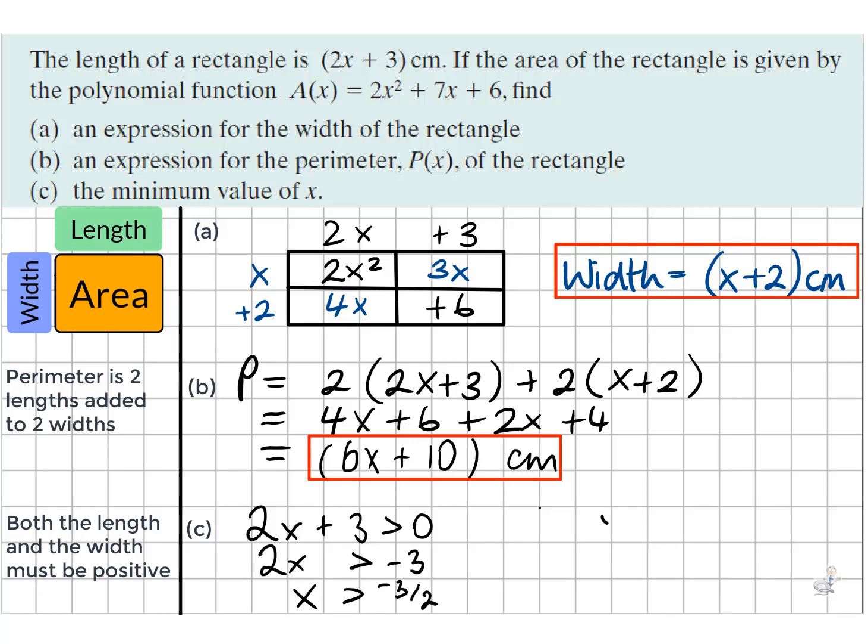If the width was positive, this would give us that x is bigger than negative 2. The bigger of these numbers is the negative 3 over 2, so this is the minimum value that x could have.